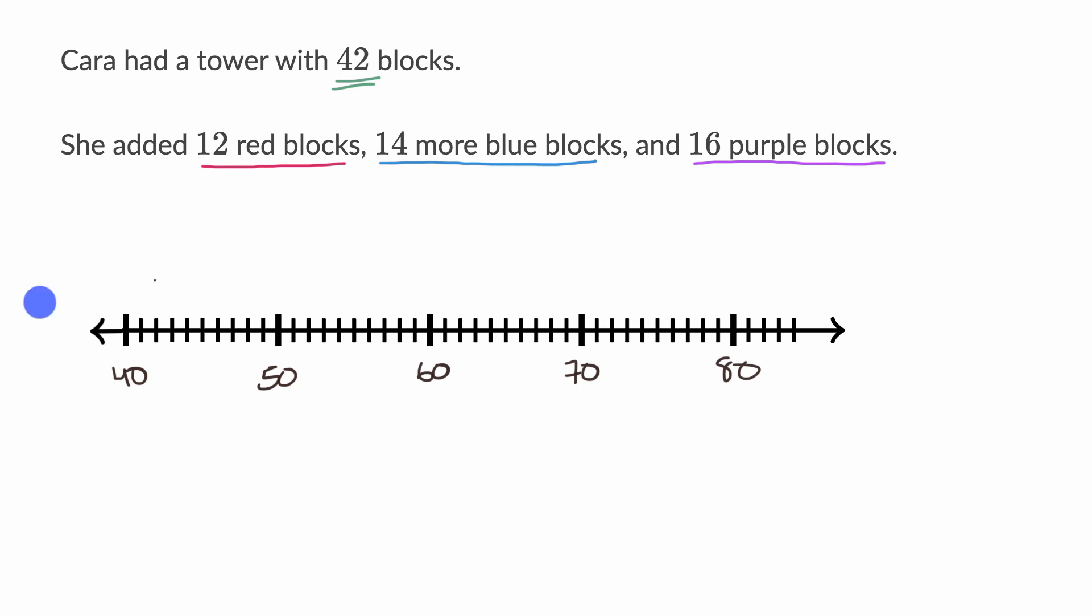All right, now let's do this together. So let's start with her starting point, the 42 blocks right over here. So we see this is 40, so we go 41, 42. So this right over here is Kara's starting point. That is 42 blocks.